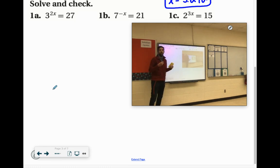All right, so for this first one, I know that 27 is 3 to the third power. So I can rewrite that. 3 to the 2x equals 3 to the third power.